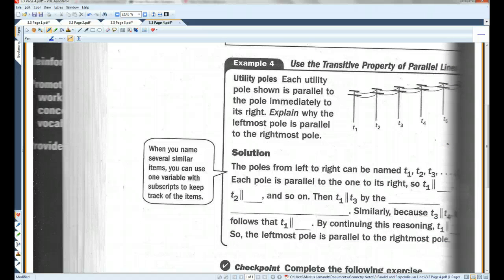Alright. Each utility pole shown is parallel to the pole immediately to its right. Explain why the leftmost pole is parallel to the rightmost pole. So, this pole is parallel to this pole. This pole is parallel to this pole, etc. They want to know why is this pole parallel all the way to this pole. I'm sorry that this got cut off in the copy. It says, The poles from left to right can be named T1, T2, T3, etc. Each pole is parallel to the one at its right.